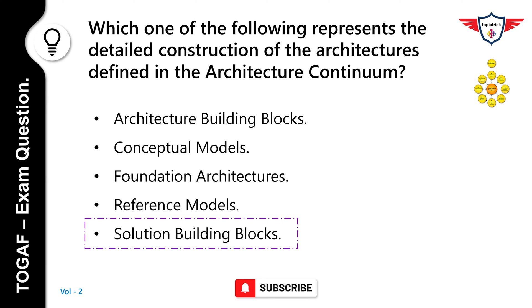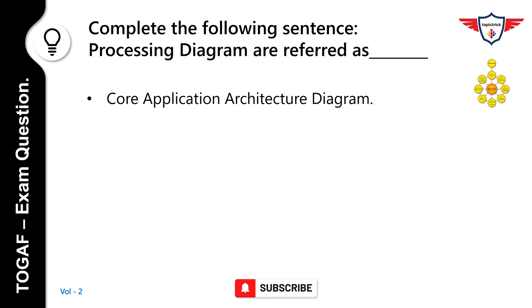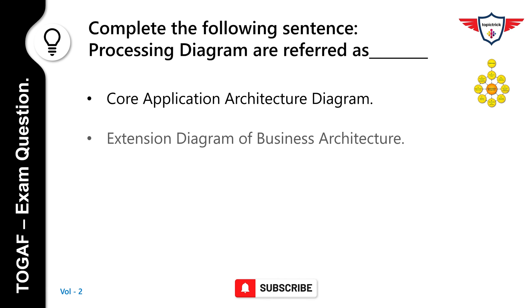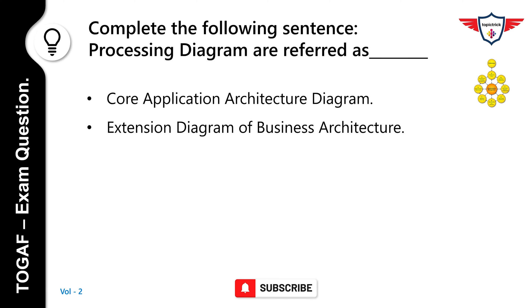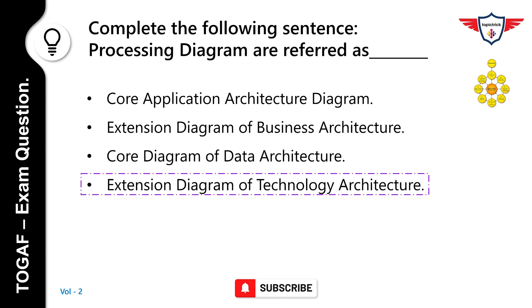Complete the following sentence: Processing Diagrams are referred to as which of the following? Options: Core Application Architecture Diagram, Extension Diagram of Business Architecture, Core Diagram of Data Architecture, Extension Diagram of Technology Architecture. The correct answer is Extension Diagram of Technology Architecture. The three categories of Extension Diagrams are: Processing Diagram, Networked Computing or Hardware Diagram, and Network and Communication Diagram.